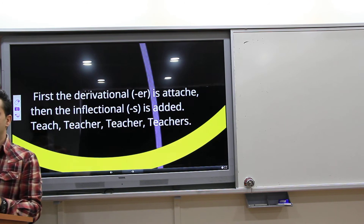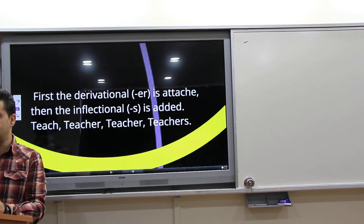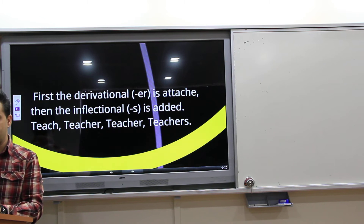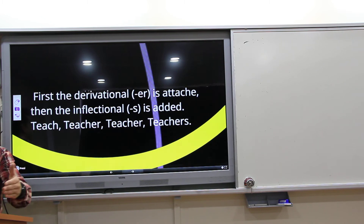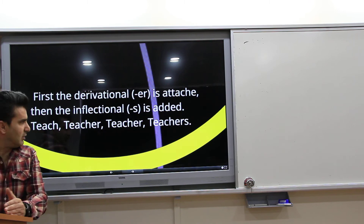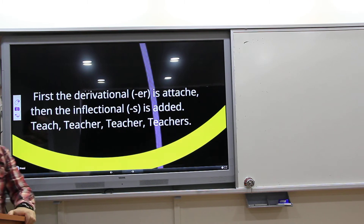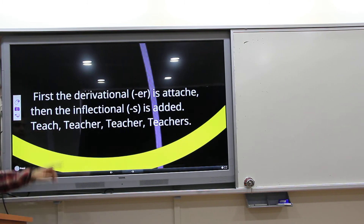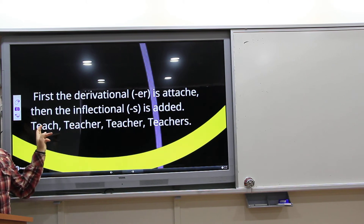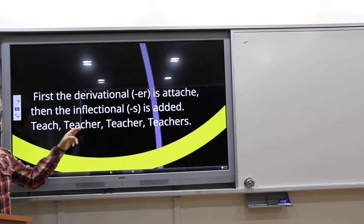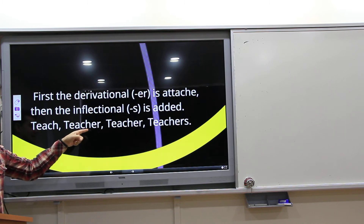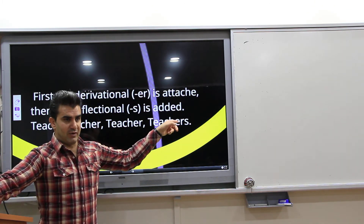When derivational and inflectional morphemes are both used, they have an order. First, we use derivational morphemes, then inflectional morphemes. For example, the derivational suffix '-er' is attached to 'teach' to derive 'teacher,' and then the inflectional suffix '-s' is added to give 'teachers.'